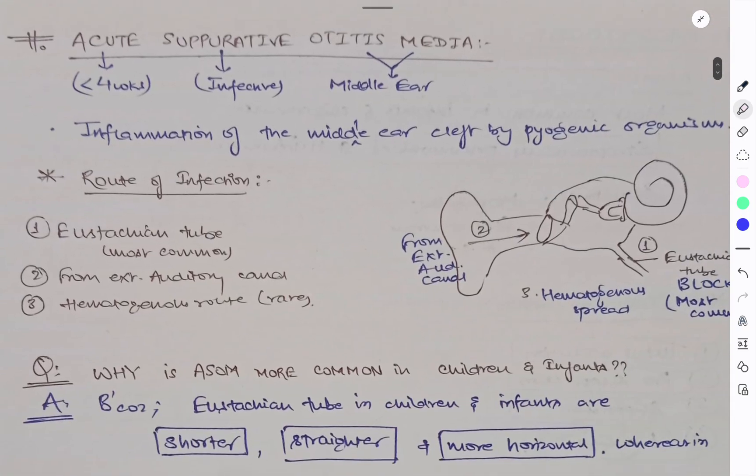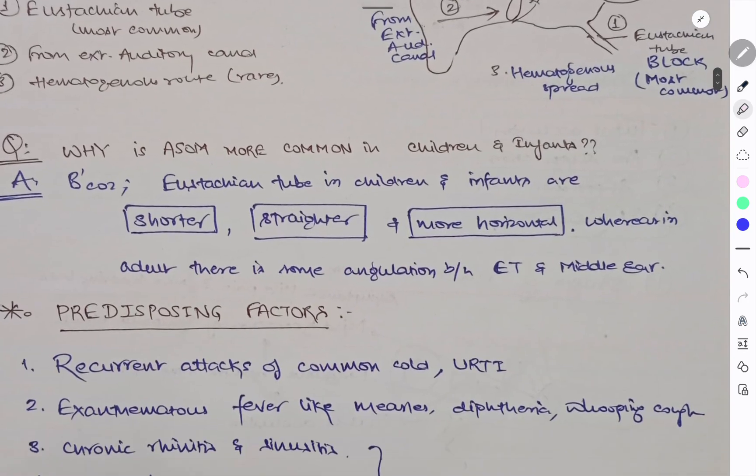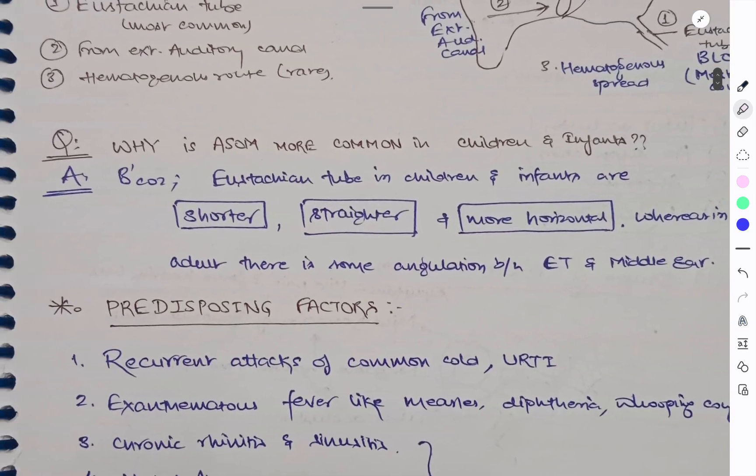What are the routes of infections for ASOM? It may be due to the ET tube block or from the external auditory canal or hematogenous spread, that is rare. So draw this diagram in exam to represent this. Let's have a question: Why is ASOM more common in children and infants? Because Eustachian tubes in children and infants are shorter, straighter, and more horizontal, whereas in adults there is some angulation between the Eustachian tube and nasopharynx. Therefore, ASOM is more common in children.